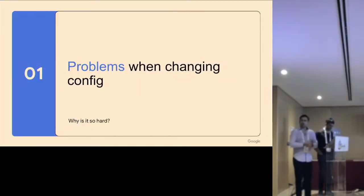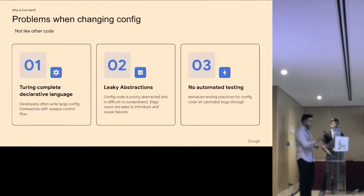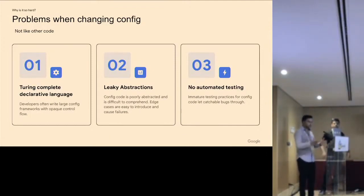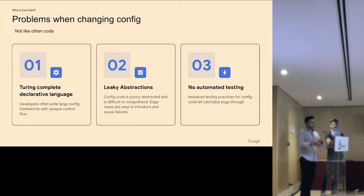In this section I'm hoping to explain why this is a problem we want to solve and why configuration at Google requires this novel solution. Number one: Google's primary configuration language is Turing-complete and declarative with very complicated control flow and unique reference resolution. So it's often difficult for developers to do a two-person review where you're looking at someone else's code change and trying to understand what the outcome of that will be.